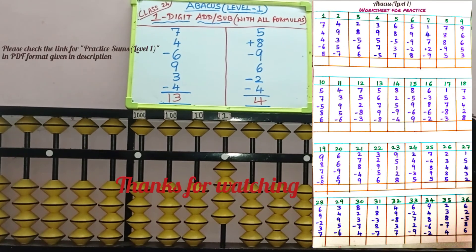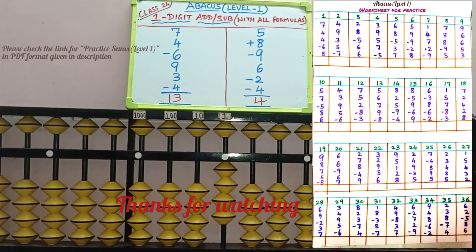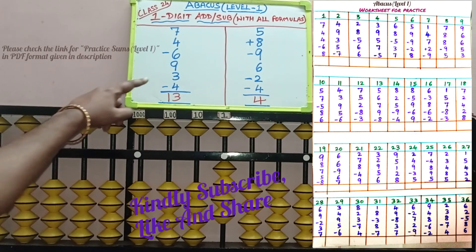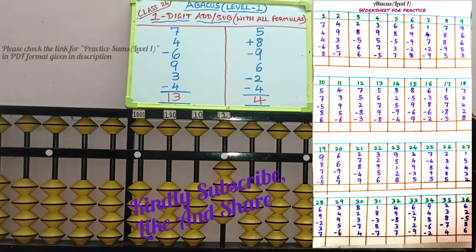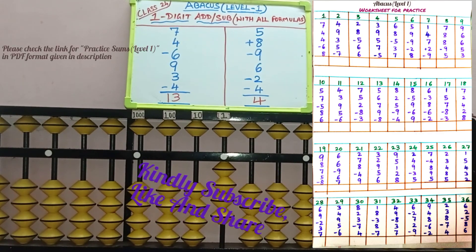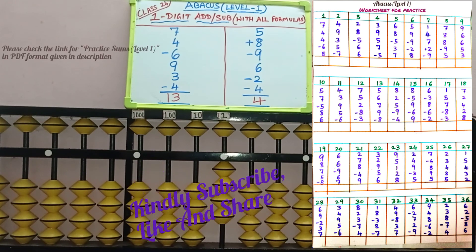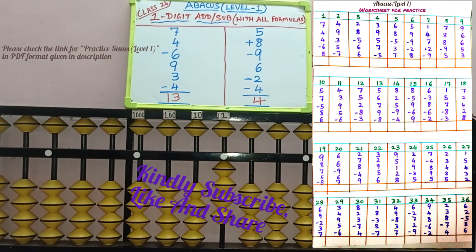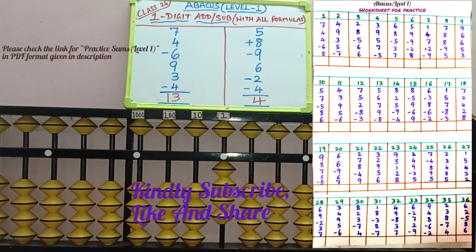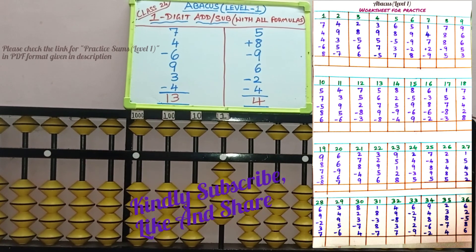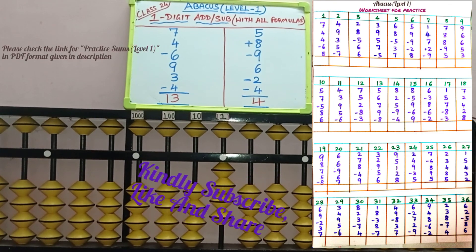Like this, you have to solve all the problems. I have attached some worksheet problems in PDF format — 36 problems from level 1, so try to solve them with the abacus. If you have any doubts, please reach out. Up to this video, you have completed level 1. From the next video, we will start the second level. Thank you friends.